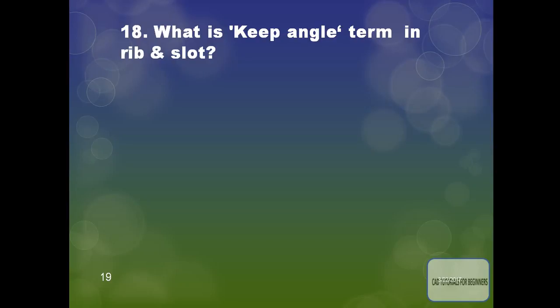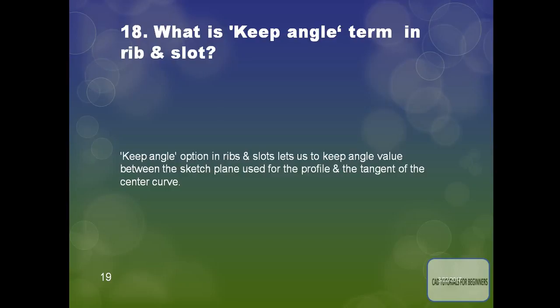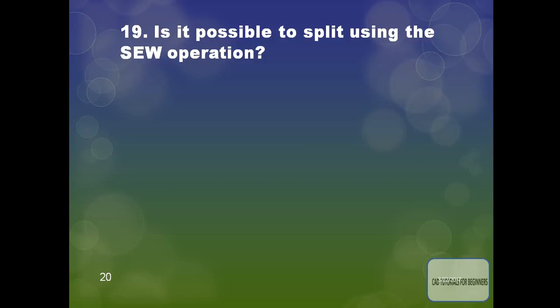What is the significance of the Keep Angle option in rib and slot? The Keep Angle option in ribs and slots lets us keep the angle value between the sketch plane used for the profile and the tangent of the center curve. This is the meaning of the Keep Angle term in rib and slot.